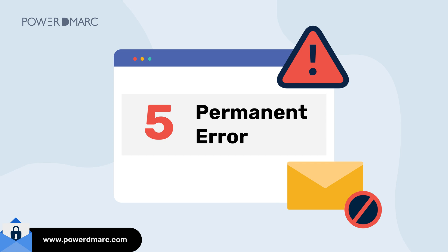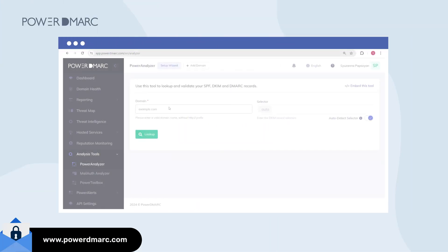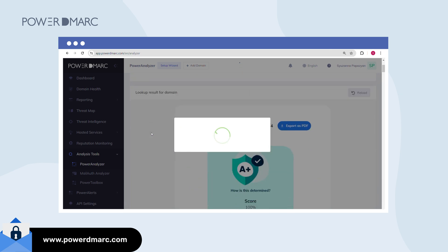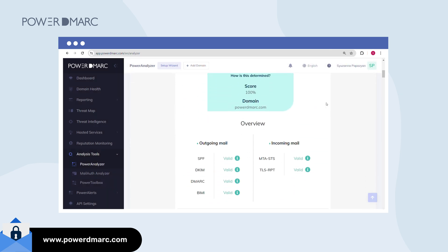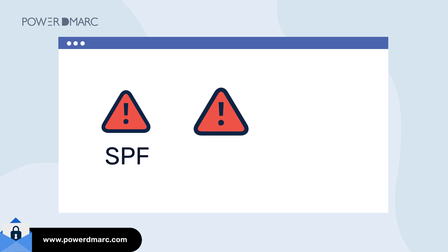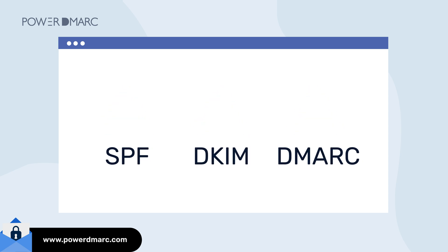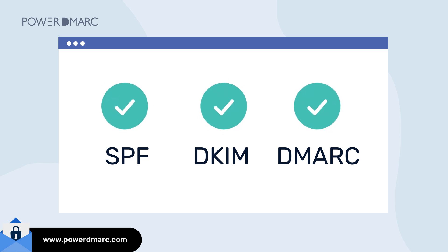So what can you do about this? Simply sign up on PowerDMARC for free and enter your domain name in our Power Analyzer tool. We quickly scan your DNS for email authentication records to test your compliance with Yahoo's sender rules. If you find that your domain is missing SPF, DKIM, and DMARC records, you need to act now. Use our setup wizard to configure these protocols within minutes effortlessly, and you're good to go. This is a quick and easy fix to stop receiving Yahoo errors due to compliance issues.